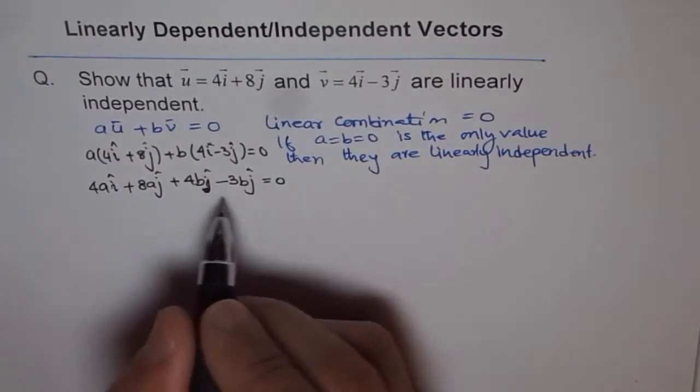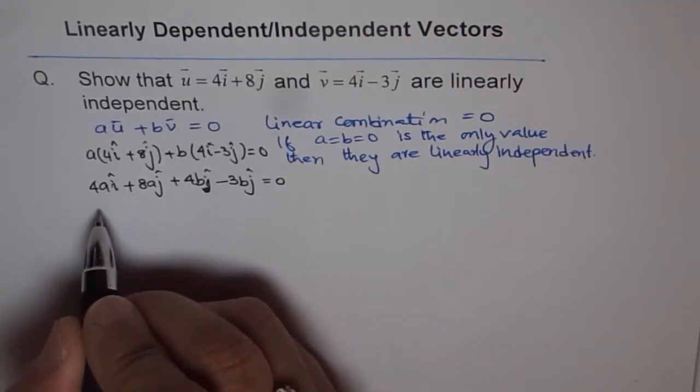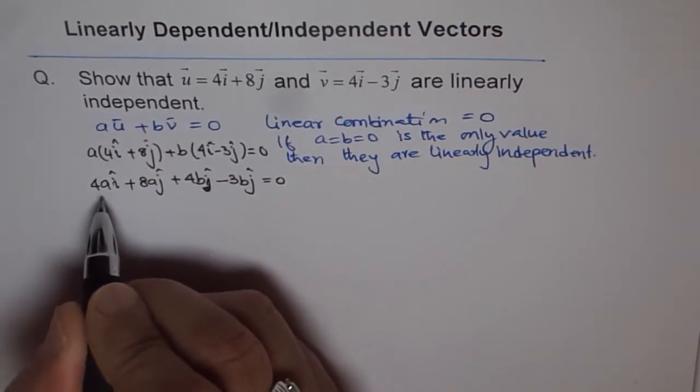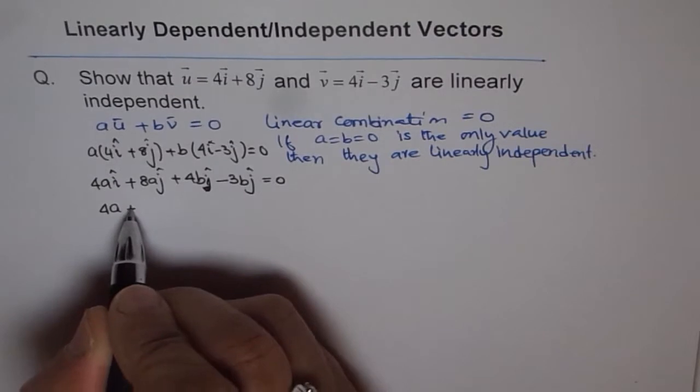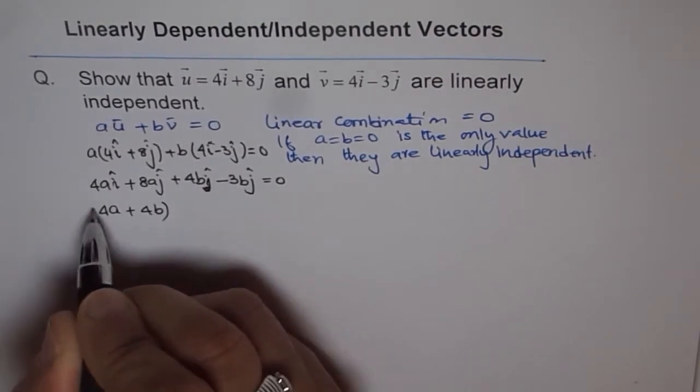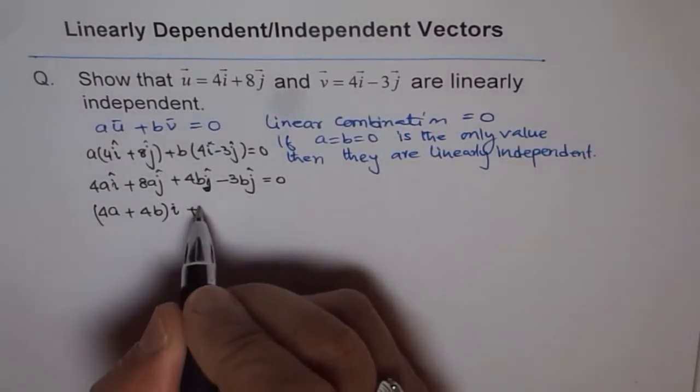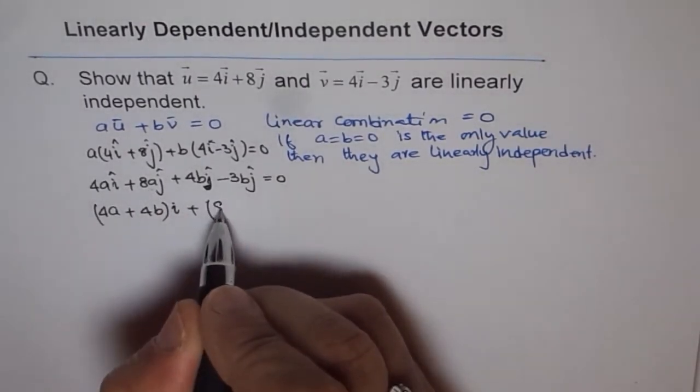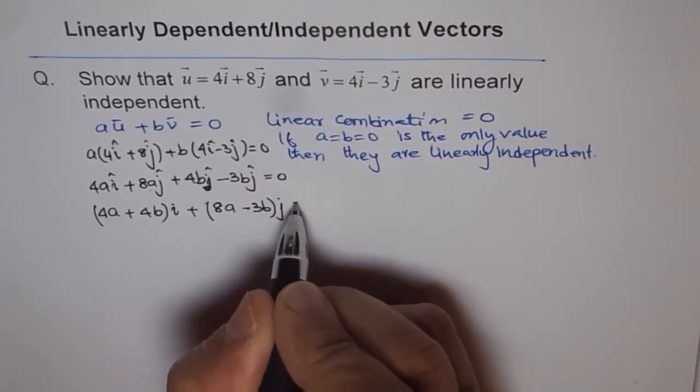Now let's take the components common and recombine these. The i components are 4a plus 4b, that gives me i components. And for j we have 8a minus 3b, that is j equals 0.